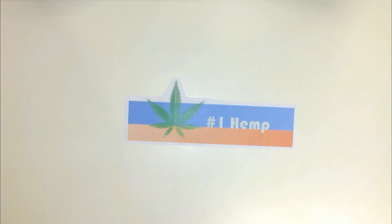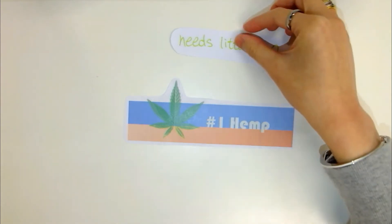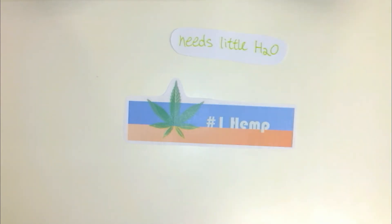Number 1: Hemp. It's one of the most environmentally friendly fibers currently available. This plant is naturally resistant and requires little water. It takes only 11 weeks to mature and can make very durable clothes.